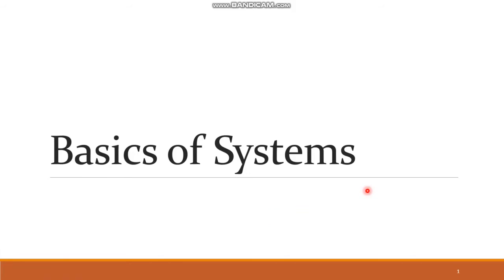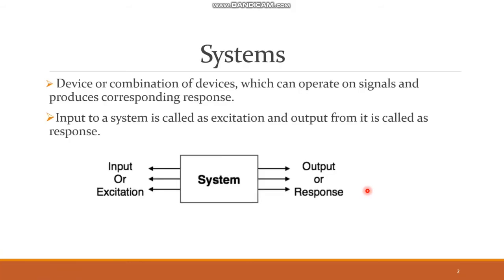Hello all, welcome to the session on basics of systems. We all come across different types of systems in our daily life like electrical systems, mechanical systems, biological systems, electromechanical systems and so on. Physical devices such as motors, amplifiers, and filters are also examples of systems. A system can be defined as an entity that acts on an input signal and transforms it to an output signal — a device or combination of devices which can operate on signals and produce a corresponding response.